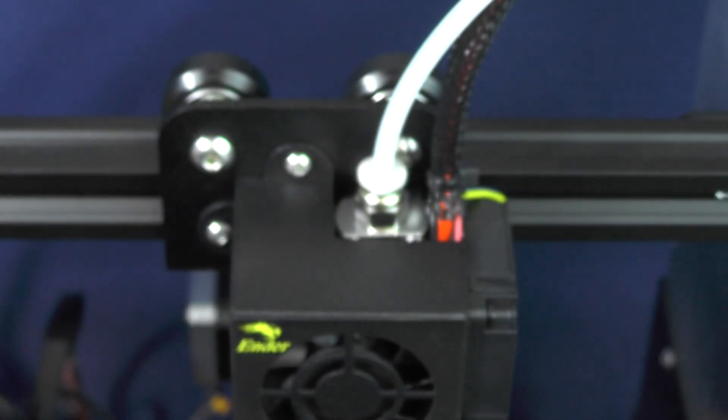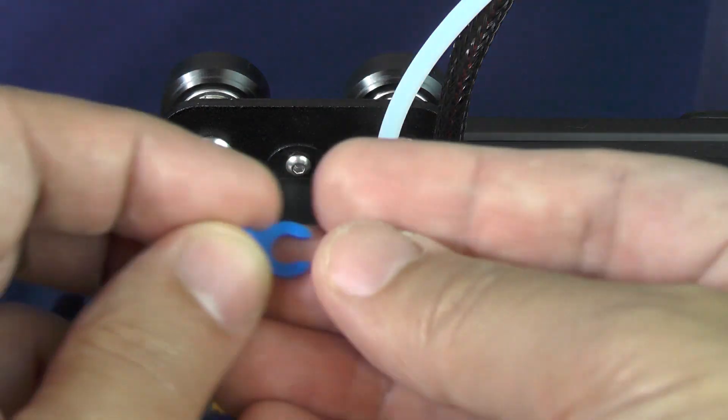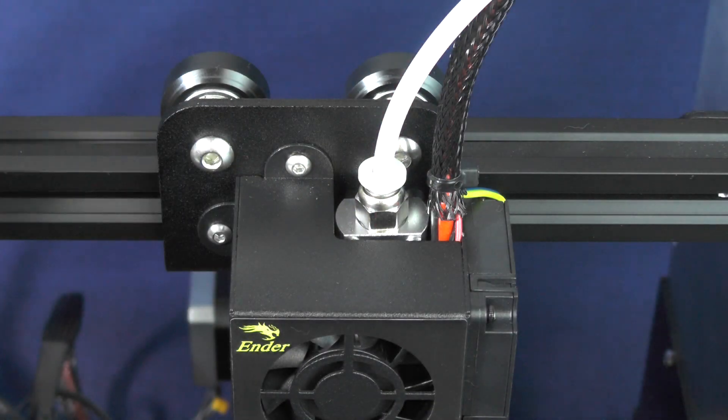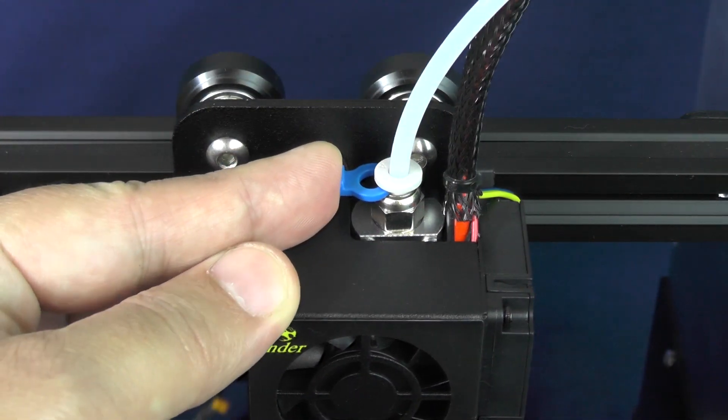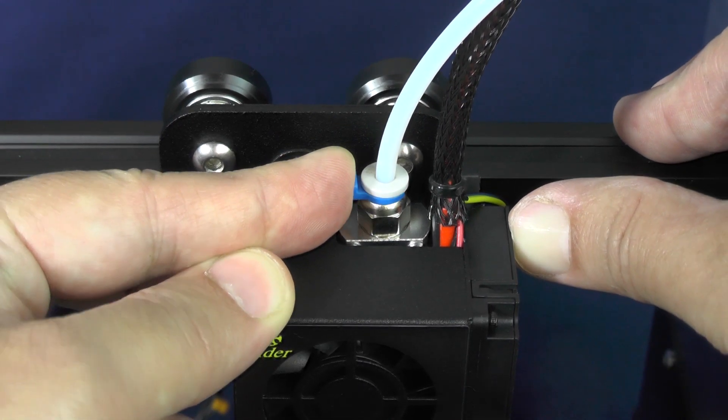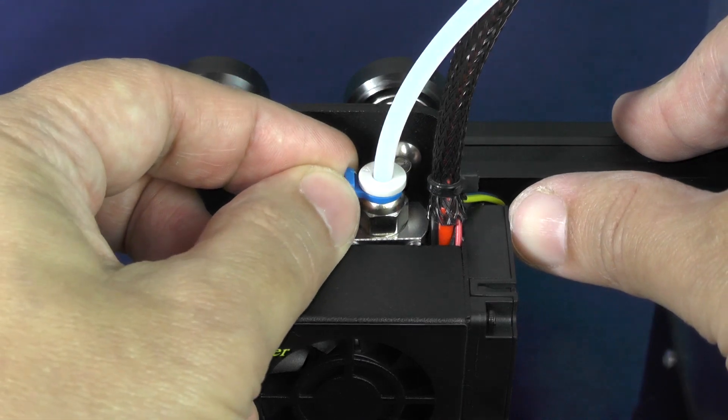Now, turn the printer around and go to the hotend carriage. Pick up another one of those plastic clips and wedge it around the collar of the Bowden tube coupler. As I said before, this will prevent the Bowden tube from being accidentally released by the Bowden tube coupler.